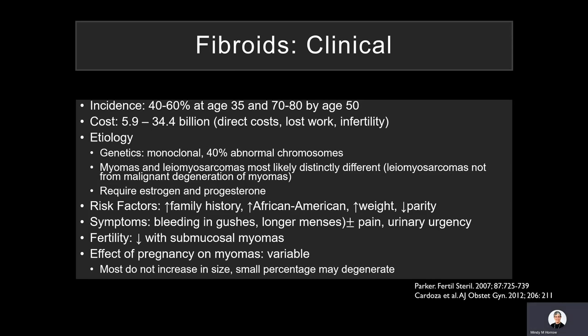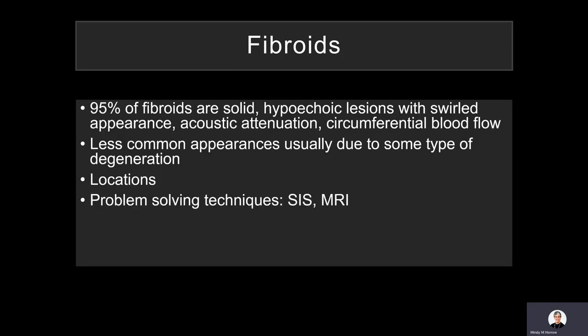Pregnancy itself doesn't usually affect fibroids, though there may be some degeneration. On ultrasound, the vast majority of fibroids are pretty typical — solid, generally hypoechoic compared to the myometrium. There are a variety of less common appearances that we'll discuss, because they can appear rather odd and cause problems with diagnosis. It's also important to note their location, and we'll discuss some problem-solving techniques.